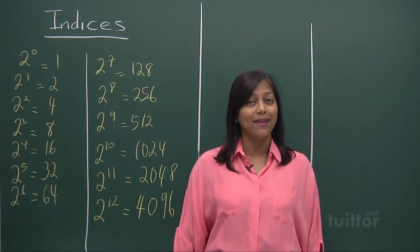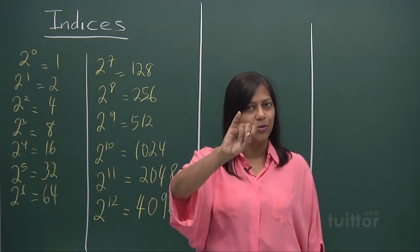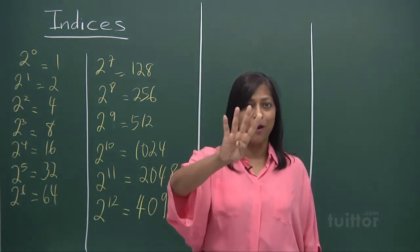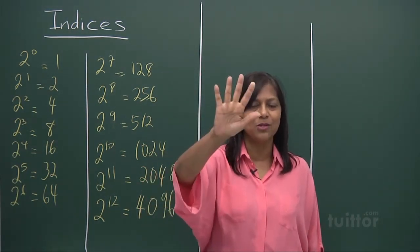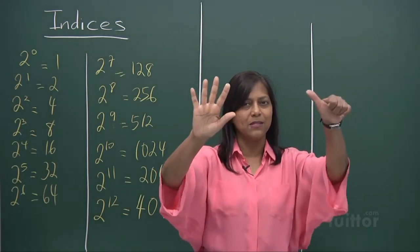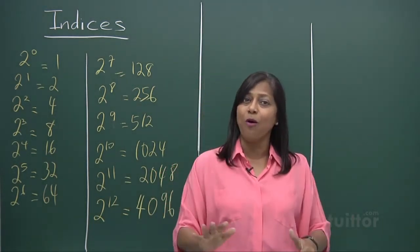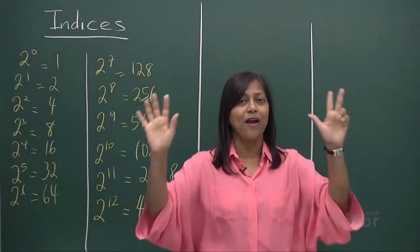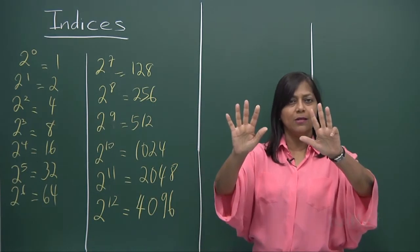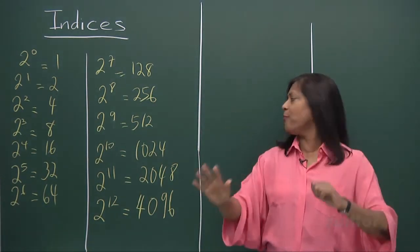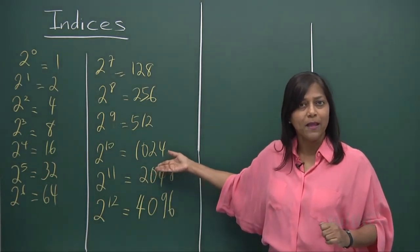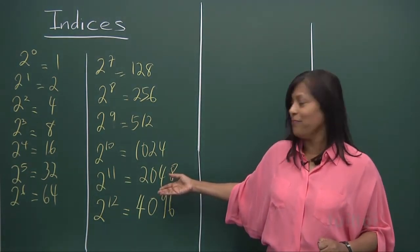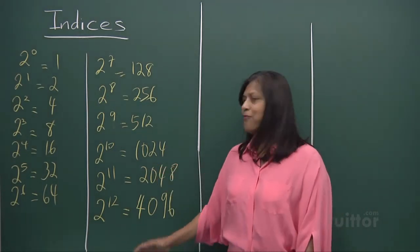2 to the power of 0, you got a 1. To the power of 1, you get a 2. To the power of 2, you get a 4. To the power of 3, you get an 8. To the power of 4 is a 16. And 16 times 2, you get a 32. 2 to the power of 6, 32 times 2, 64. 64 times 2, 128. 128 times 2, 256. 256 times 2, 512. And 2 to the power of 10, 512 and 512 gives you 1024. And 2 to the power of 11, you get a double effect on that. You get 2048. And 2 to the power of 12, you get 4096.